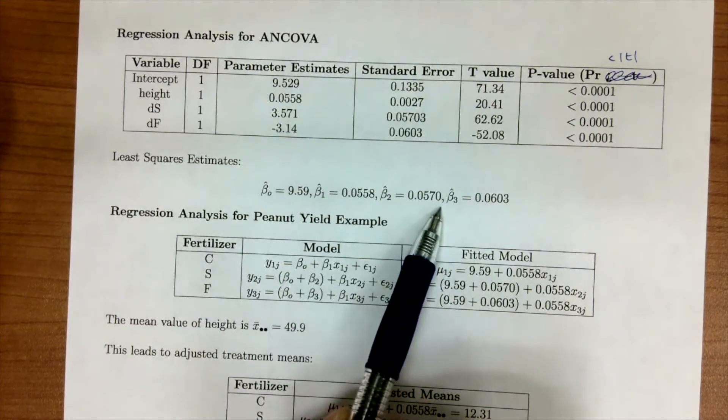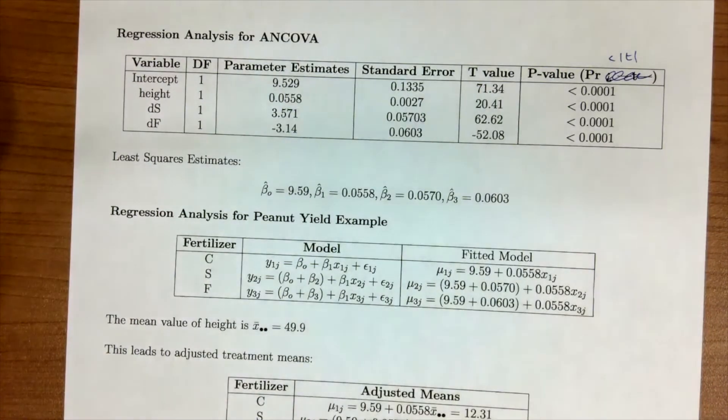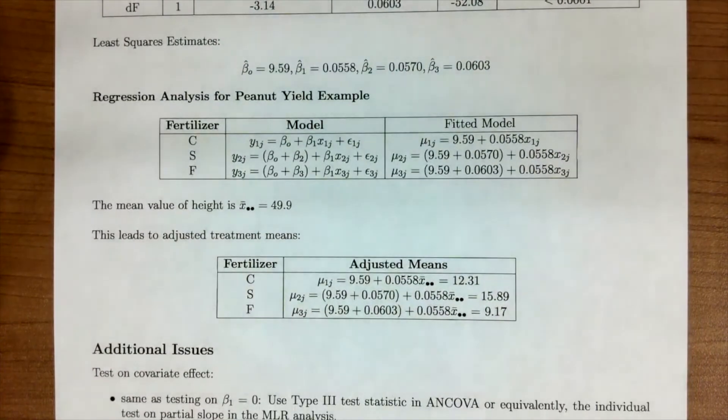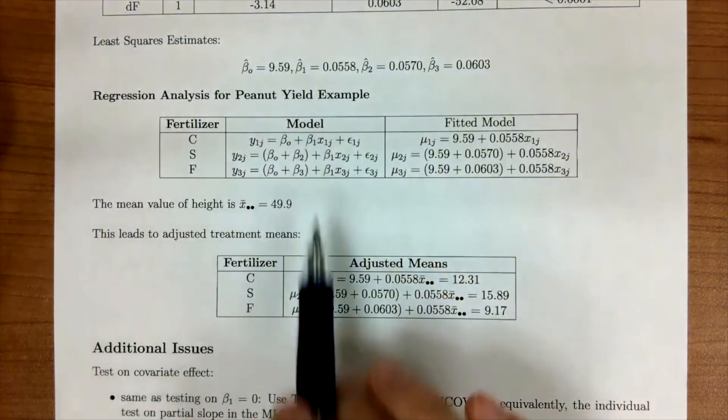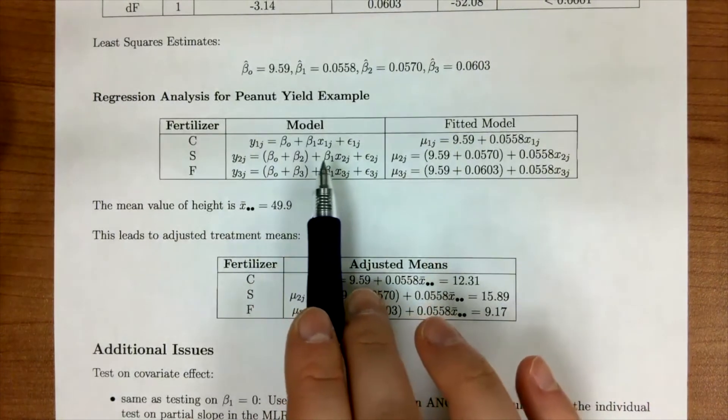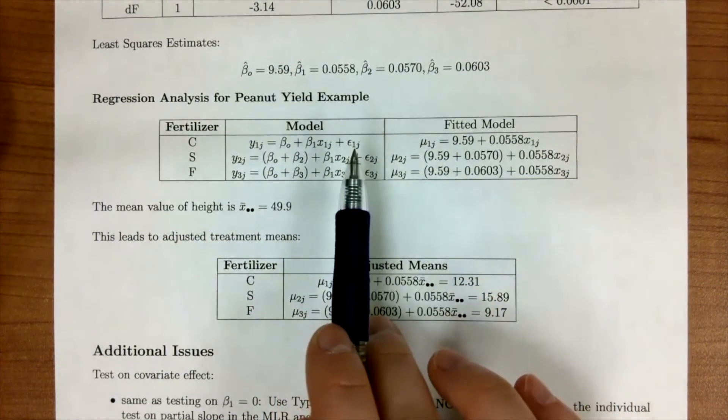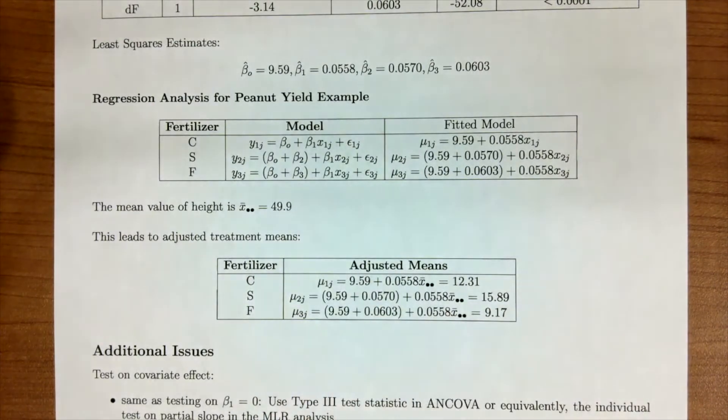And then we are going to plug those in to our model that we had. And so we could get three separate regression analysis or fits for each fertilizer by taking these variables, these estimated variables, and plugging it into the model. Remember when we go from the population model to the fitted, our epsilon ij's get canceled out. Not canceled out. They're removed because they're not part of the fitted model.